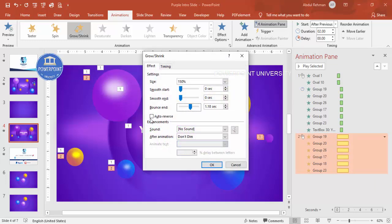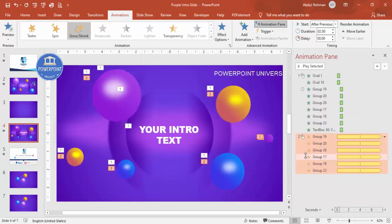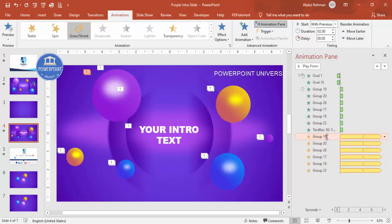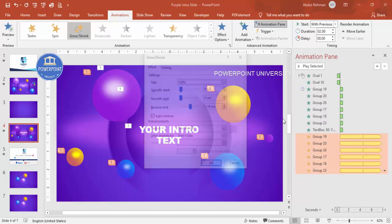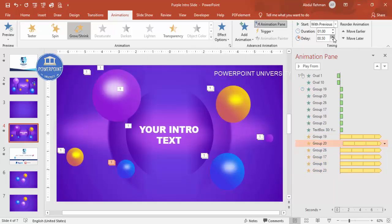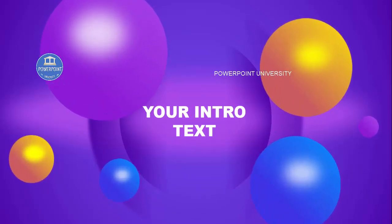Set the timing duration to Medium, set it to play Until End of Slide, and set it to start With Previous. Now you can see the bubbles growing and shrinking. If it's too slow, go to Effect Options, Timing, and make it faster. You can also add different delays to different balls so they animate at different rates, creating a more dynamic effect. Your intro slide is complete.